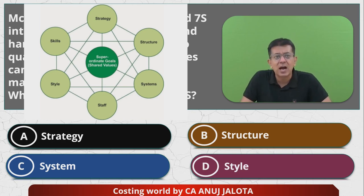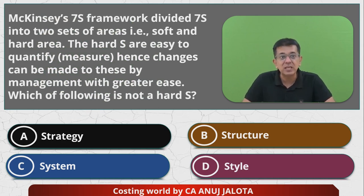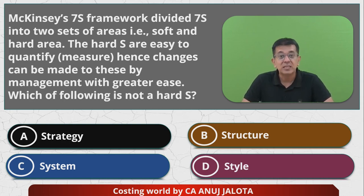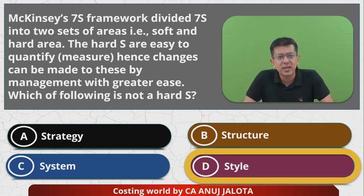So there are three Hard S: Strategy, Structure, and Systems. The rest are Soft S. The question was: which of the following is not a Hard S? Out of the four options, the first three — A, B, C — are Hard S. They can be seen, changed, and quantified. But Style is a Soft S — style of management, style of leadership — these cannot be quantified very easily. The answer is D. That's the correct one. I'll see you next time with another MCQ. Till then, happy learning. Bye.